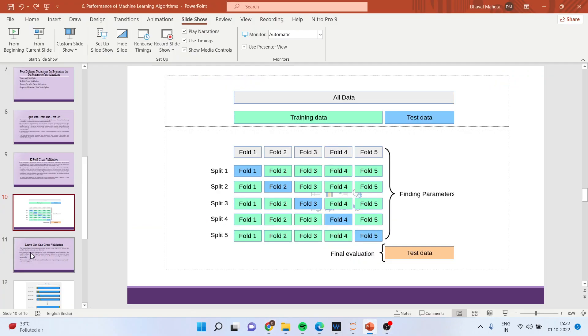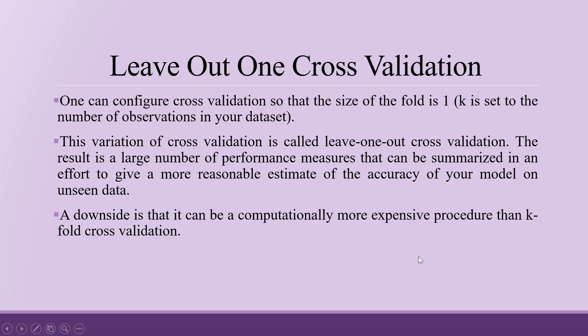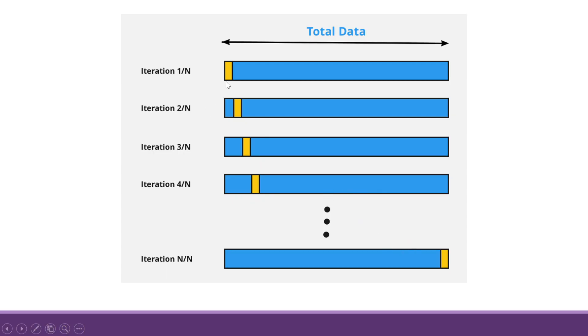Next is Leave-One-Out cross validation. Cross validation can be configured so the fold size is 1, with K set to the number of observations in the dataset. The result is a large number of performance measures that give a more reasonable estimate of accuracy on unseen data, though it can be computationally more expensive than K-fold cross validation. One observation is removed, and the algorithm is trained and tested — this is repeated for N iterations.